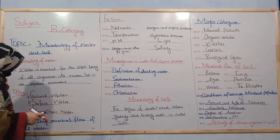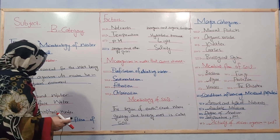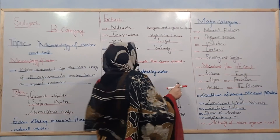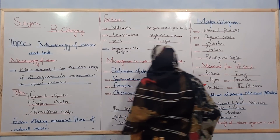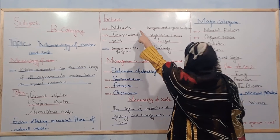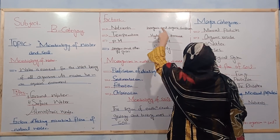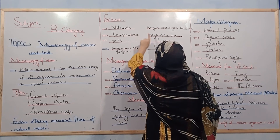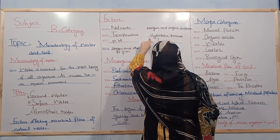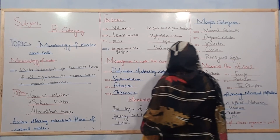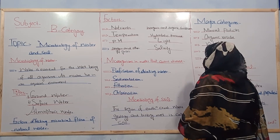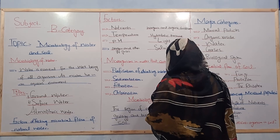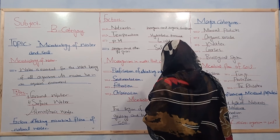We will discuss the factors affecting the microbial flora of natural water. These factors include organic and inorganic nutrients, temperature, hydrostatic pressure, pH level, light, oxygen and gases, and salinity.